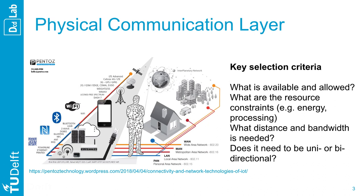Looking at the environment is always the first step. From a hospital to a household, from a single body to an urban-scale environment, options already available or load can vary significantly. Then, what is the distance to cover and the amount of data to transmit? The bandwidth is the rate of data transfer measured in bits per second. Some technologies offer the ability to transmit and receive data — so-called bi-directional — while others work only one way, unidirectional.